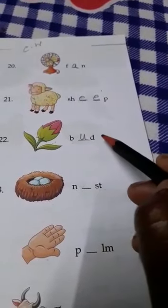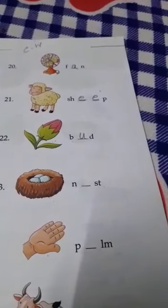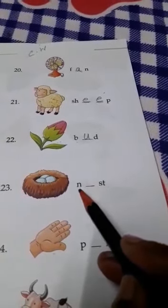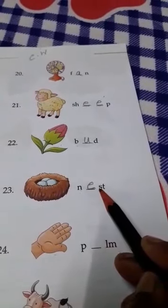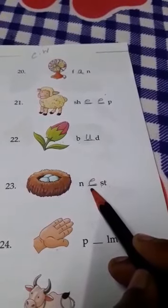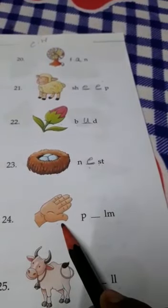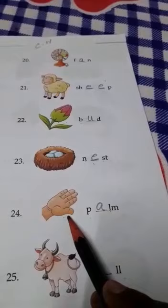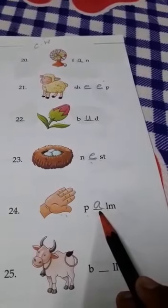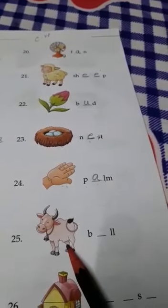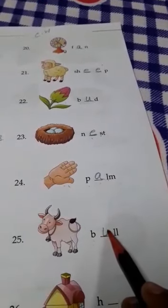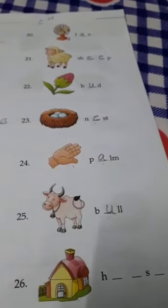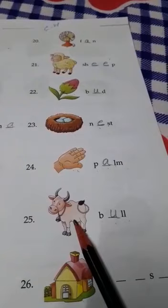And children, this B and D are called what? Consonant. This is nest. And spelling of nest is N-E-S-T. So, here, E is a vowel. This is palm. P-A-L-M. Palm. Here, A is a vowel. This is bull. B-U-L-L. Here, U is a vowel or consonant? Vowel. And another name of bull is ox.